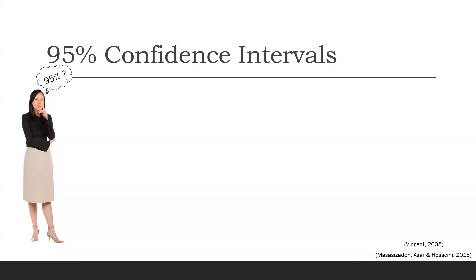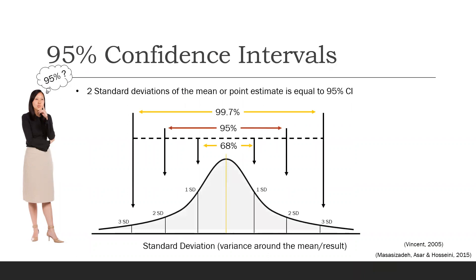So you may wonder where does the 95% come from. To answer this, we need to take a closer look at standard deviation. In research terms, standard deviation and standard error represent the uncertainty around the point estimate or the mean of the result.